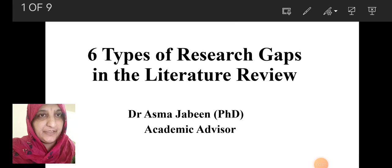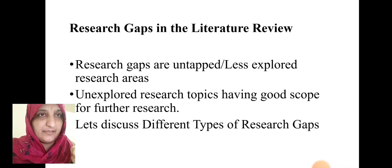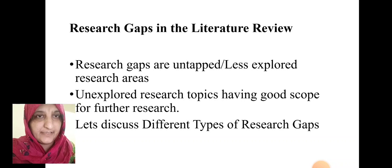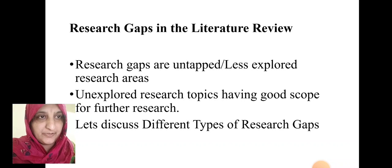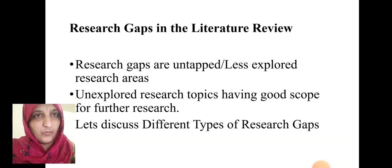Six types of research gaps in literature review. Let's first have a look at what a research gap in literature review is. Research gaps are untapped or less exposed research areas, or unexplored research topics, which have good scope for further research. Let's discuss different types of research gaps one by one.